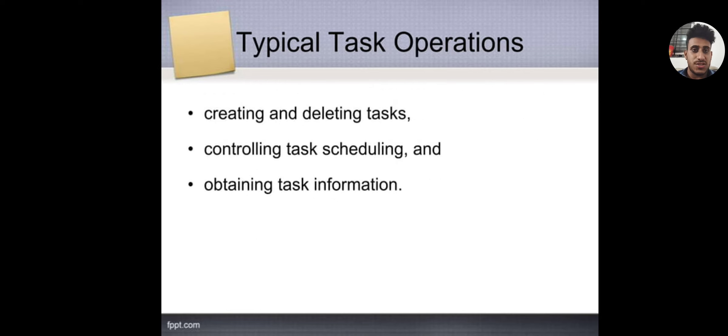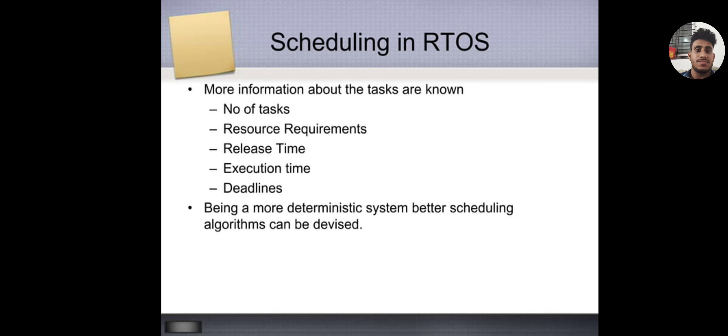Typical task operations: Creating and deleting tasks, controlling task scheduling, and obtaining task information. Scheduling in RTOS: More information about the tasks are known - number of tasks, resource requirements, release time, execution time, and deadlines. Being a more deterministic system, better scheduling algorithms can be devised.